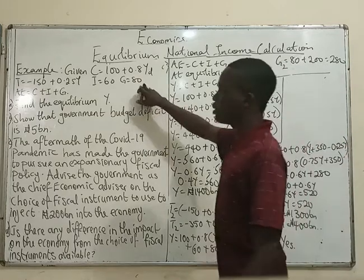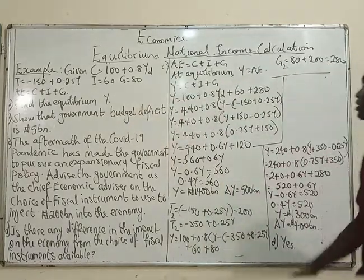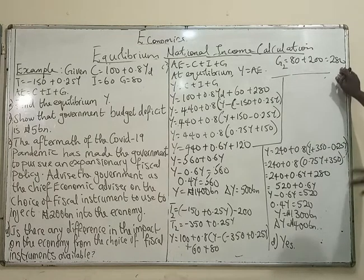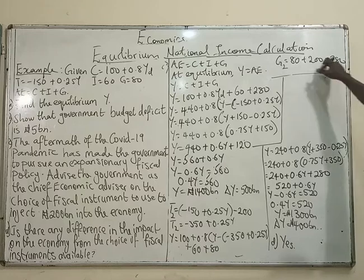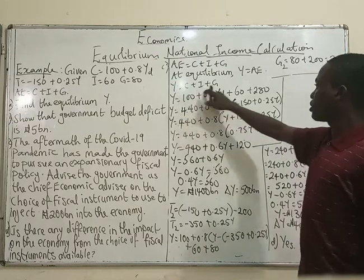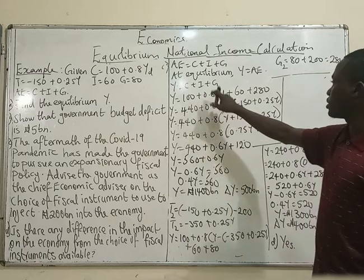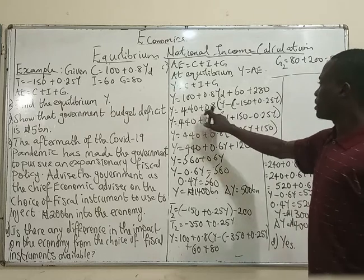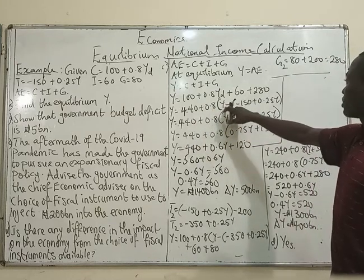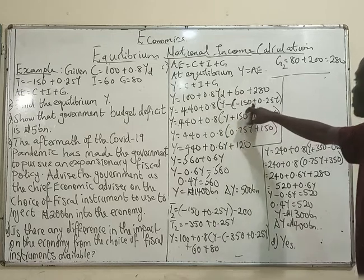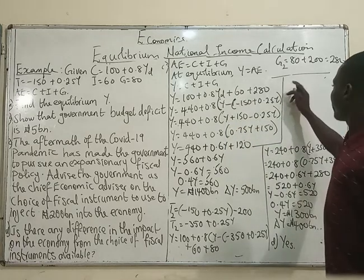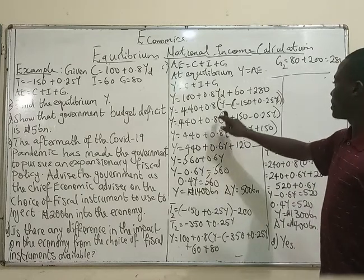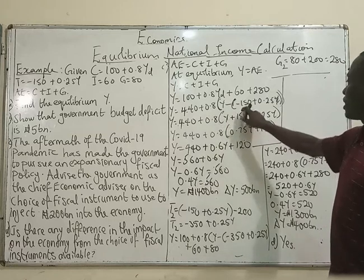Remember that government spending was initially 80 billion. If government spending increases by 200, that gives us G2 equals 80 plus 200 equals 280 billion. So we resolve the whole thing using 280 instead of 80. Y equals C plus I plus G: Y equals 100 plus 60 plus 280, so the constants sum to 440, plus 0.8 times bracket Y minus open bracket minus 150 plus 0.25Y close bracket.